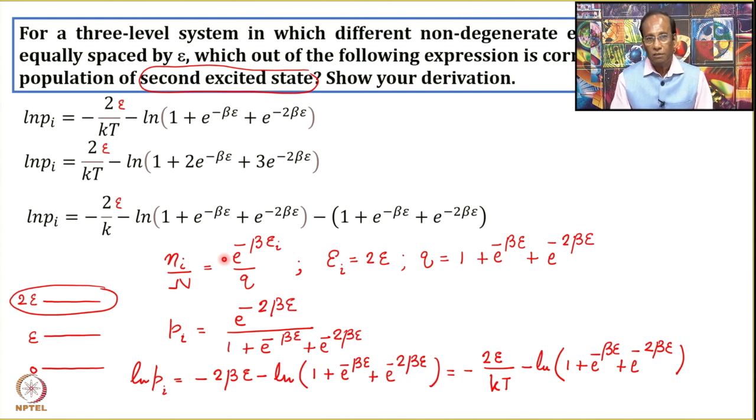The take-home lessons from this discussion: we should be able to write expressions for the partition function when discrete energy levels are given, such as a uniform ladder or some sequence of energy levels, and then write expressions for fractional population. Once we can write these expressions, it will be easier in upcoming lectures to connect the partition function with different thermodynamic quantities. Thank you very much.